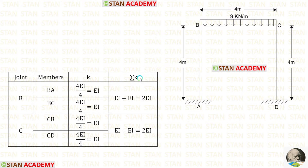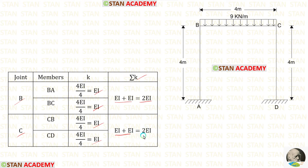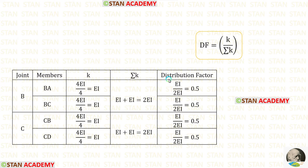Now let us find sigma K. At joint B, we have found two stiffness values; adding both we get 2EI. At joint C also, we have two stiffness values; adding both we get 2EI. The distribution factor formula is K/sigma K. Using the calculated values of K and sigma K, we can find all the distribution factors.